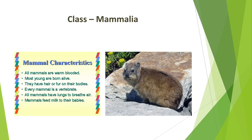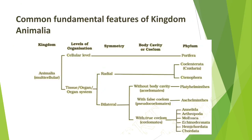They are viviparous, with a few exceptions, and development occurs in utero. There are so many examples around us — kangaroo, camel, rat, dog, cat, elephants, etc.